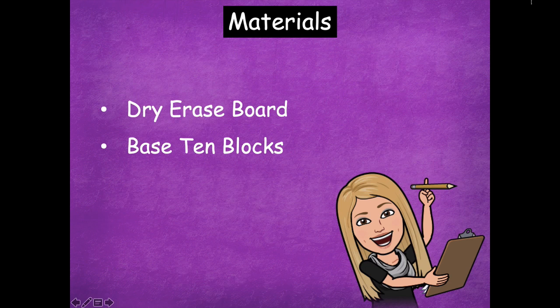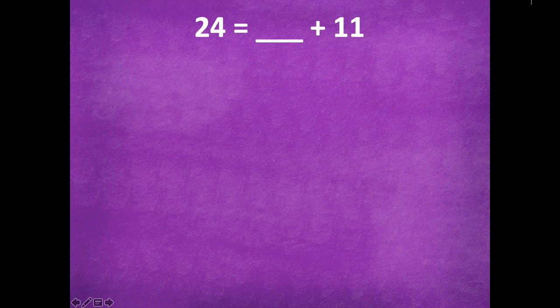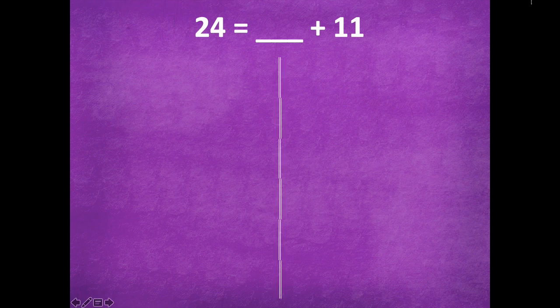All right, so let's start with 24 equals blank plus 11. So this is the same way that we would solve them from our previous lesson. The sum is just in the beginning instead of our two addends in the beginning. Don't let that throw you off, just go ahead and solve the same way you normally would. So let's review, there's two ways you can solve: with models or subtraction.